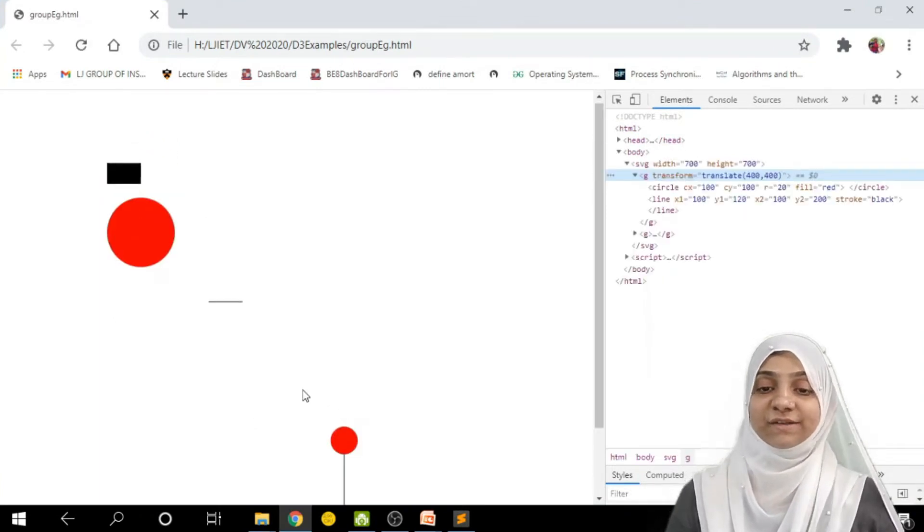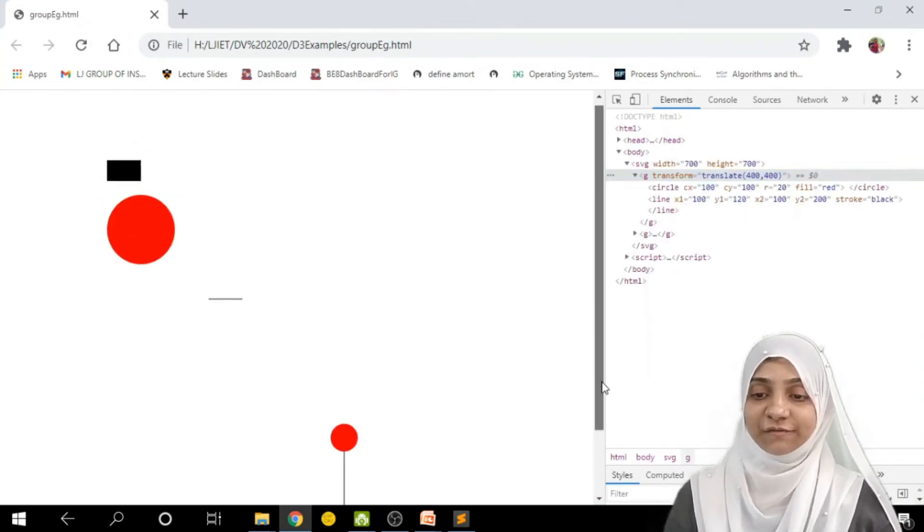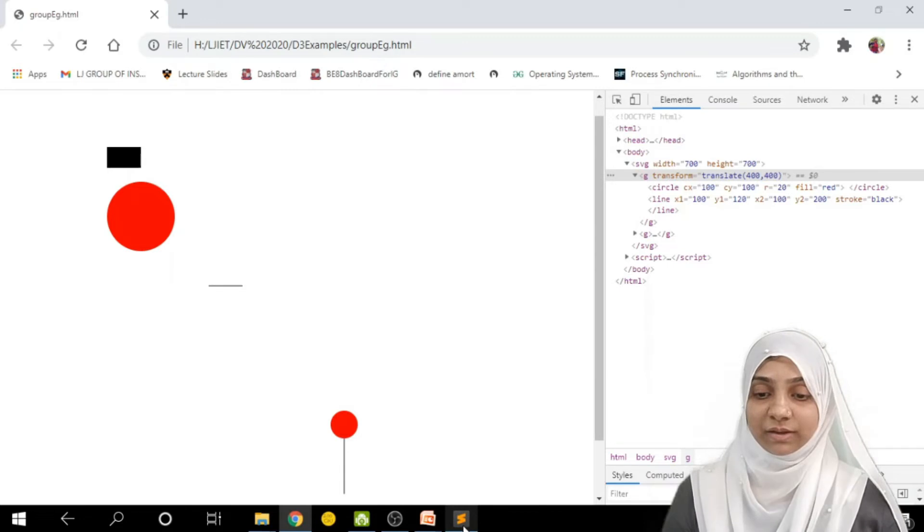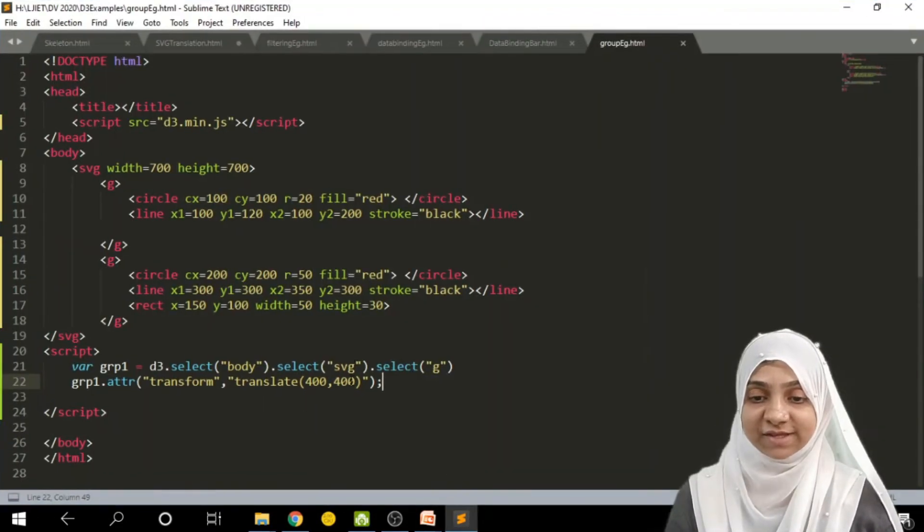So here, as you can see, first figure, which was at this location, is now translated, or it is being shifted to its new location, which is at 400, 400 coordinates. If I wish to take it more upside, I must reduce its Y value.